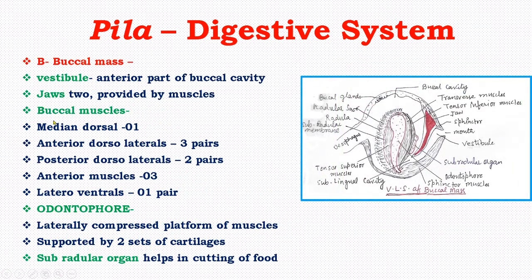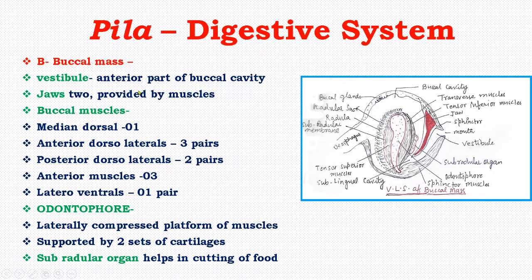Next is the buccal mass. The mouth opens into a buccal mass containing a buccal cavity or pharynx. The skin around the mouth becomes thick and folded and forms a mouth sphincter.